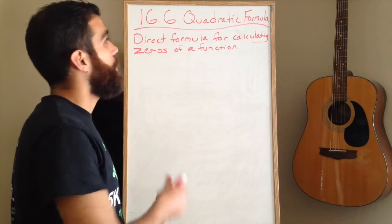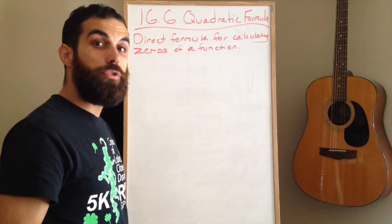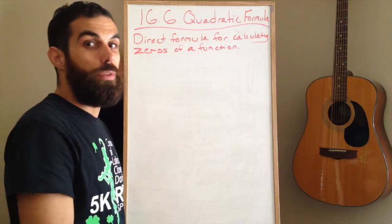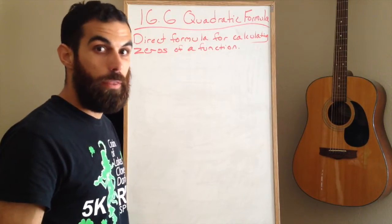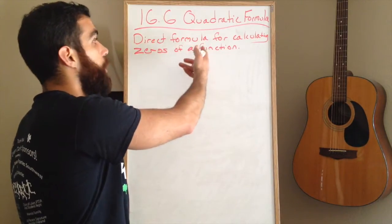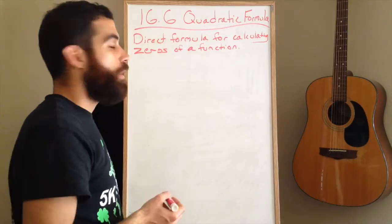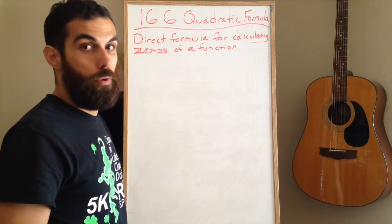Alright guys, today we're going to talk about the quadratic formula. This formula is going to allow you to factor polynomials without having to do the air conditioning method or a lot of heavy thinking. It's a direct formula for calculating the zeros of a function. So write this down, and then I'll show you the quadratic formula.